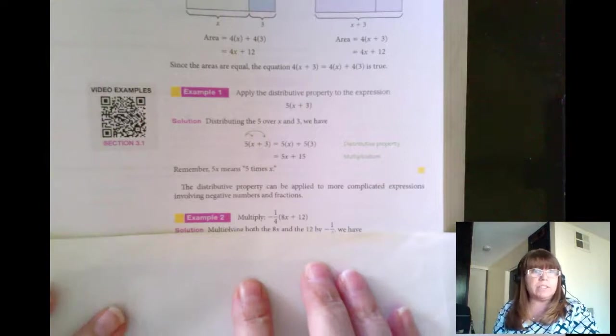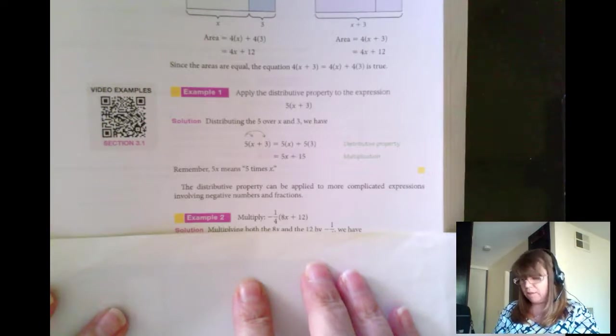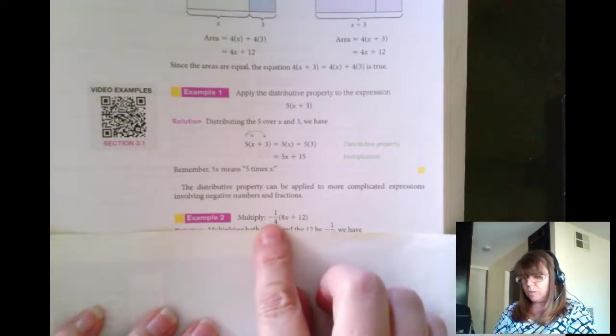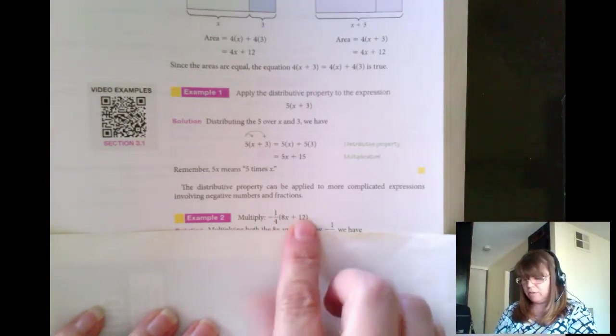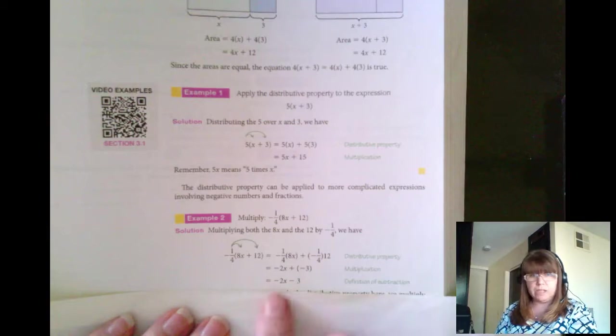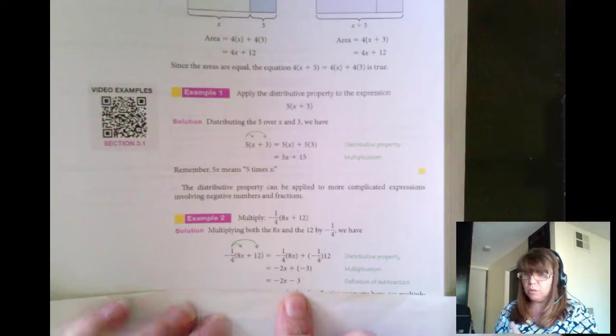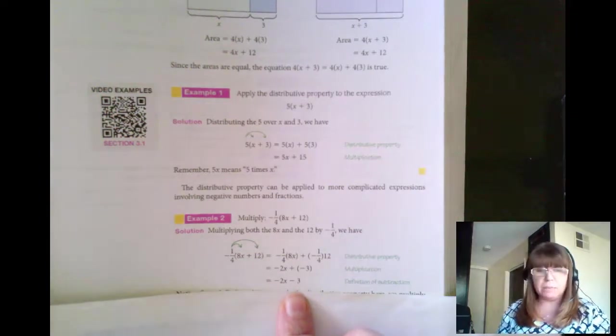Now let's take a little bit more difficult problem, and I have negative 1 fourth times the quantity 8x plus 12. So again, I'm going to distribute the negative 1 fourth to 8x and the negative 1 fourth to 12, leaving me with negative 2x minus 3. Remember your rules of multiplication with negative numbers.